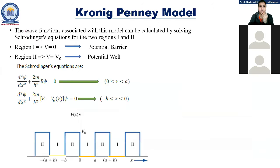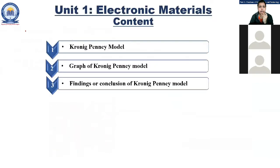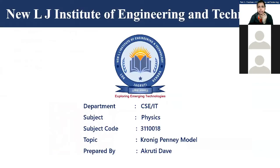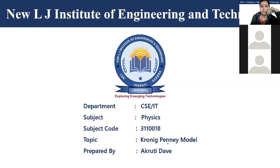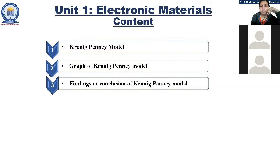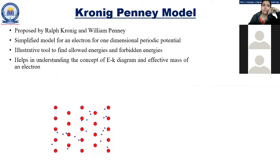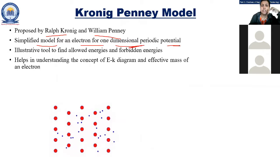The next concept is the Kronig-Penney model. It was proposed by Ralph Kronig and William Penney. It is a simplified model for an electron in a one-dimensional periodic potential, where the electron's energy repeats in a periodic measure — sometimes low, sometimes high, in a repetitive pattern. Both 'a' values are interatomic distance, as in the potential well the electron moves freely along the x-axis.